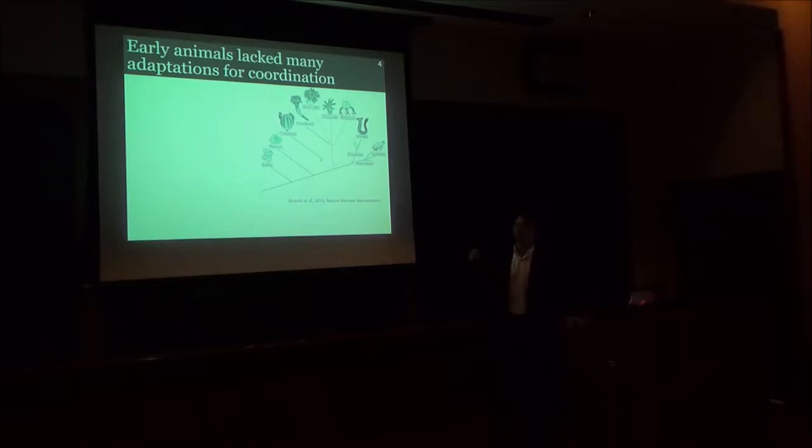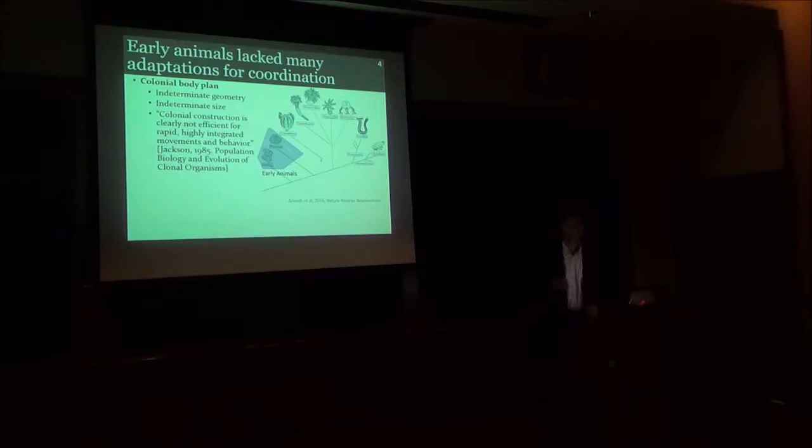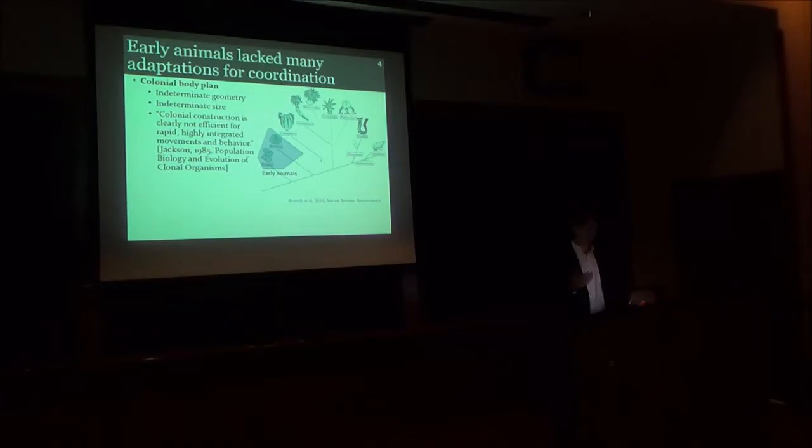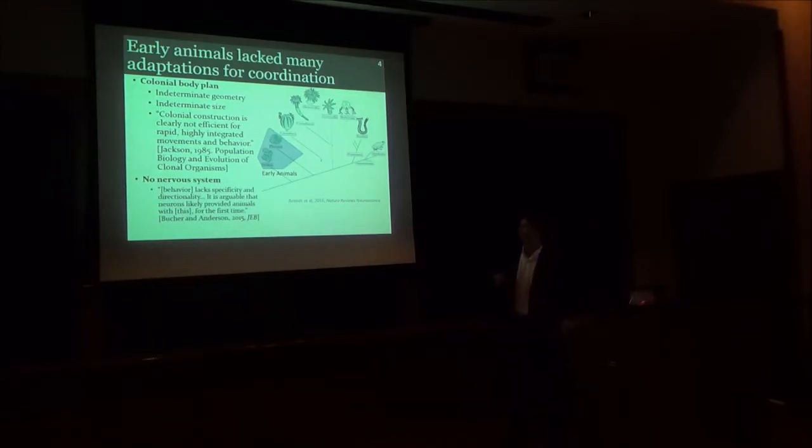I want to focus particularly on the animal tree of life, and in particular on the earliest diverged multicellular animals. These animals are quite different from us in ways that make the coordination problem more challenging. One difference is that they have colonial body plans in the sense that they are of indeterminate size and indeterminate geometry, and this is an obvious problem for coordinating highly integrated movements and behaviors. Another difference between such animals and us is that they do not have a nervous system. In fact, they don't have any neurons at all.